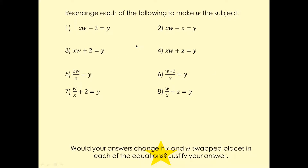Just have a look at these questions — take your time. For the first one we want to make W the subject, so cancel minus two by adding two on both sides, giving XW equals Y plus two. Then divide by X on both sides, so W equals Y plus two over X.